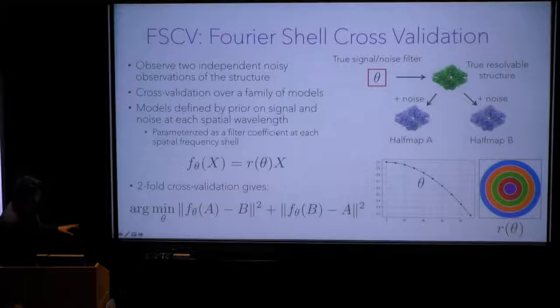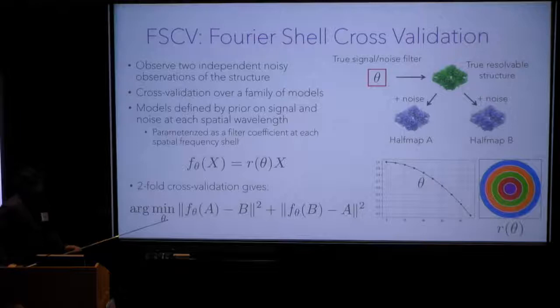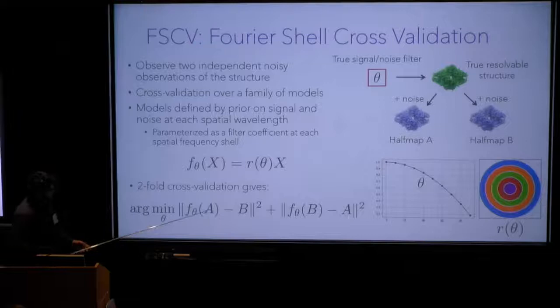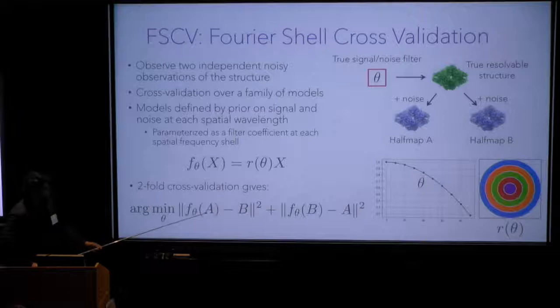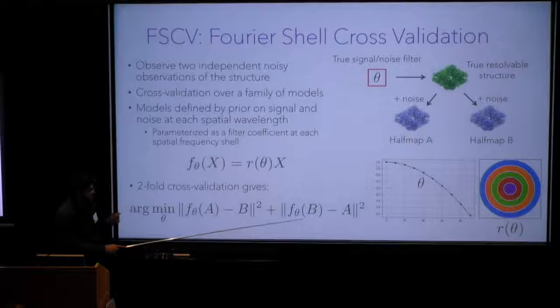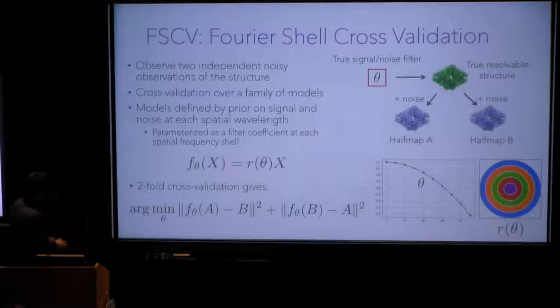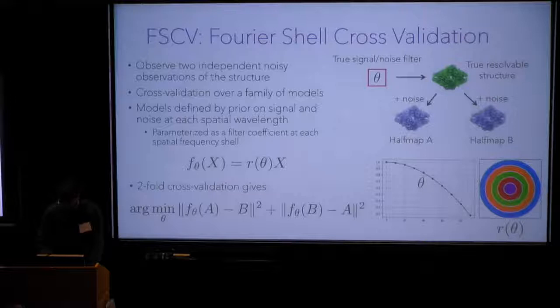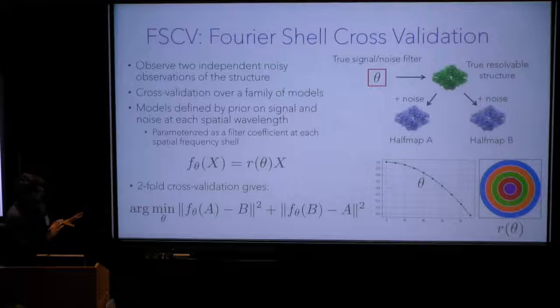Sticking this into a standard two-fold cross-validation setup yields this expression: we minimize over theta the sum of two terms. The left term holds out the B-side data, filters the A-side to reconstruct the estimated true structure, and measures the discrepancy between that filtered A and the held-out B. The right term is the mirror image — filter B, hold out A, and compare. This is a pretty natural cross-validation setup, and because it's an optimization problem, we could have chosen any F(theta); it would just make the optimization more difficult.